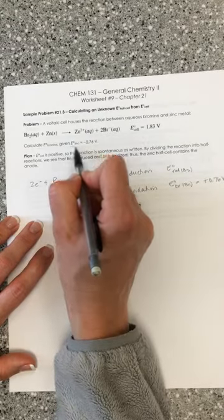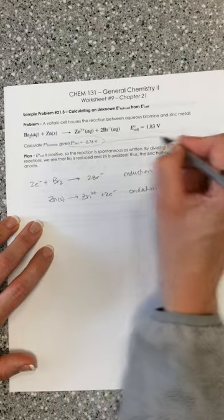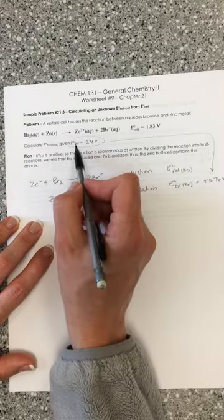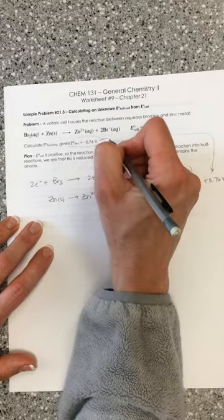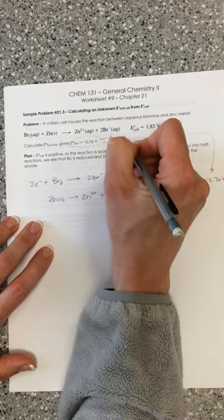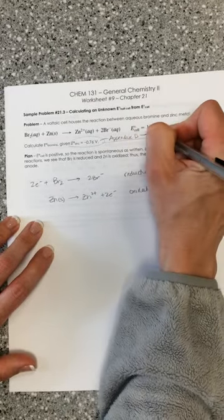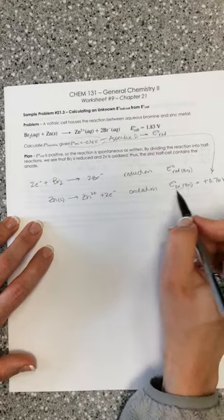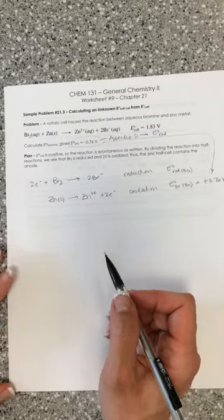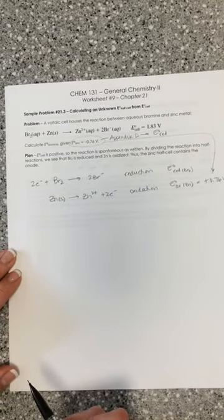And this is where what I do is going to be a little bit different from what your book does, because this, looking it up directly from appendix B, gives you the reduction potential. Since we want to consider zinc in an oxidative way, we need to take the negative of this.